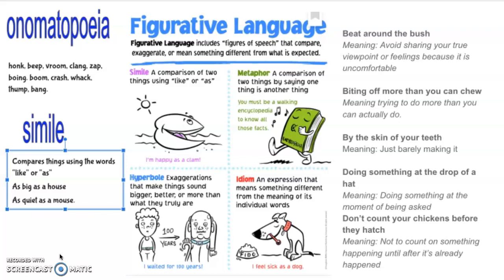So today we learned about figurative language. Authors use this kind of language to help us understand the story, visualize it, elicit emotions, and make us more interested in their reading. The different types we talked about were: similes, which use the word 'like' or 'as'; metaphors, where you say somebody is something they're really not; idioms, which are sayings we use all the time that don't mean exactly what they say but people understand them; hyperbole, which is an exaggeration to really get your point across; and onomatopoeia, which are words that represent sounds.